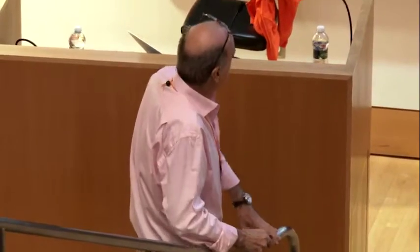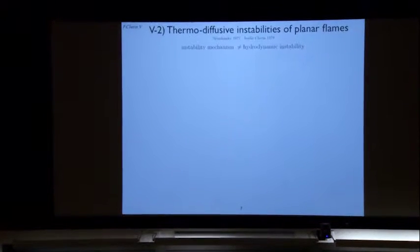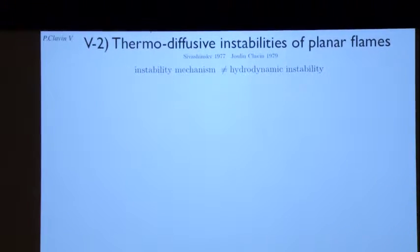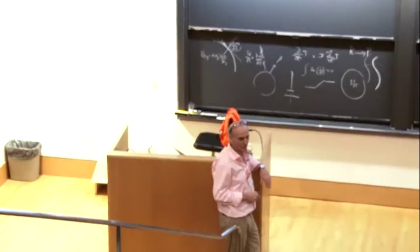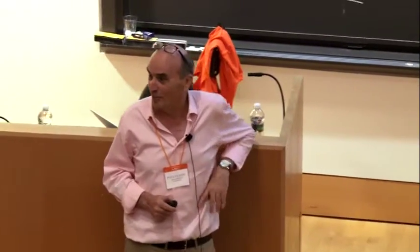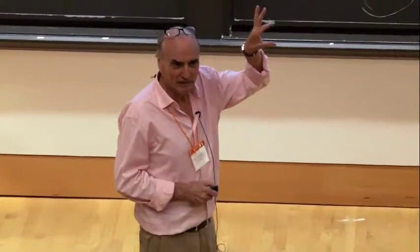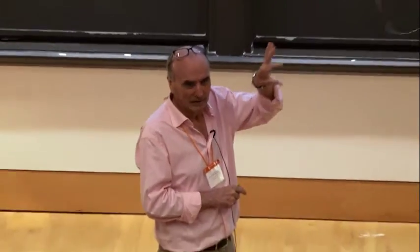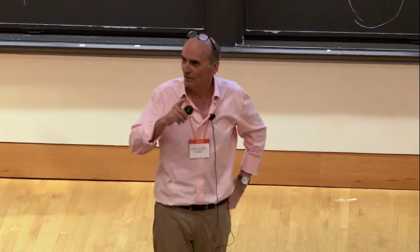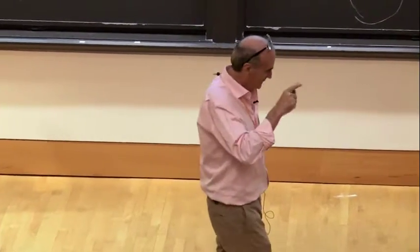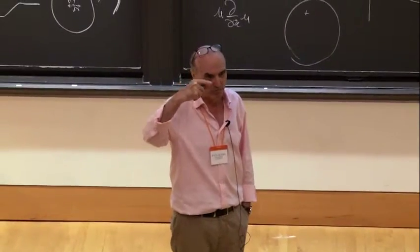Now let me go to the second instability, which is the thermodiffusive instability of a planar flame. I mentioned the work of Sivashinsky, but before Sivashinsky, the situation was confusing, because people would say the flame is unstable when the Lewis number is larger than one, and other people found the flame is unstable when it is smaller than one. The stability domain where the flame is thermodiffusively stable is near Lewis equal to one—the difference Lewis minus one is small.